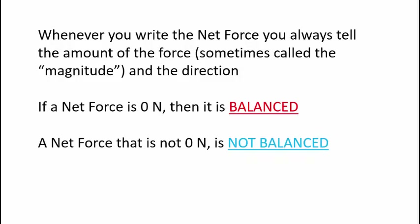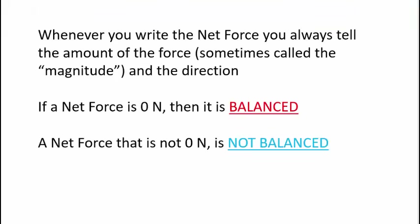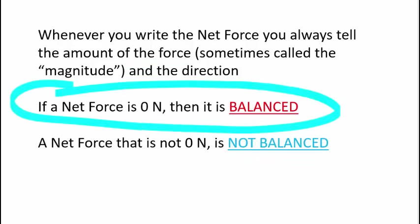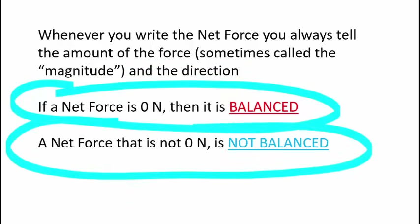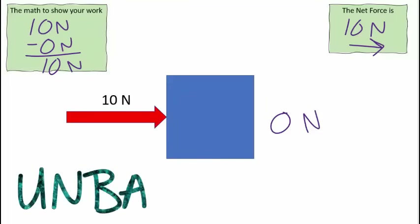Whenever we write the net force, you have to tell the amount of the force — sometimes called the magnitude in science — and you have to tell the direction, which is what we did: 10 newtons to the right. Now, is that force balanced? The rule is: if a net force is 0, it's balanced. If a net force is not 0, it's not balanced. This net force has a magnitude of 10, which is not 0, so we would say this is an unbalanced force.